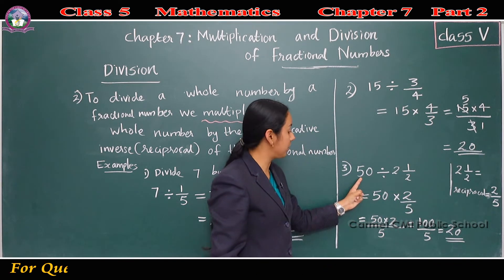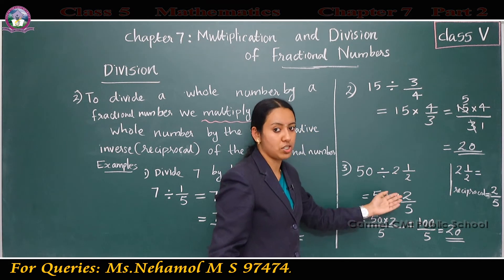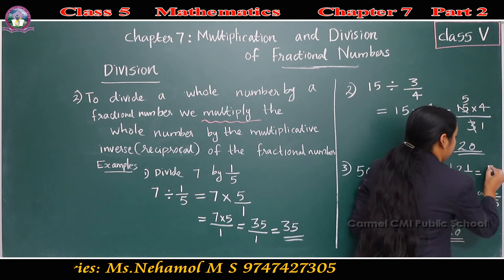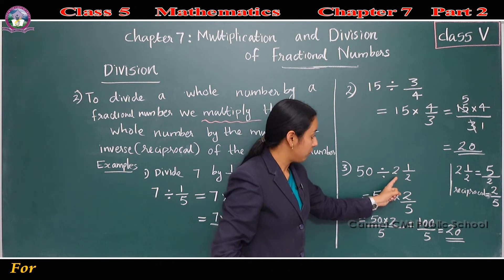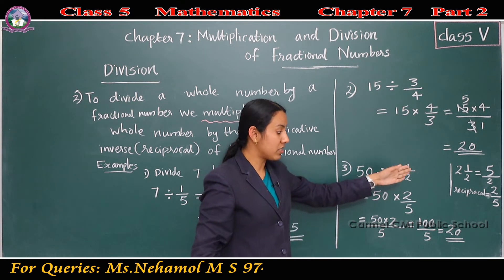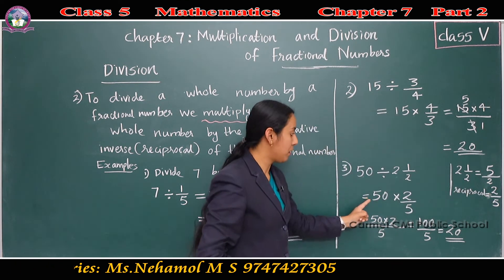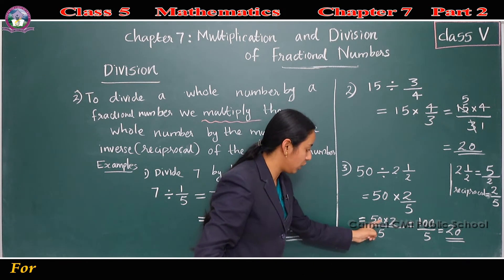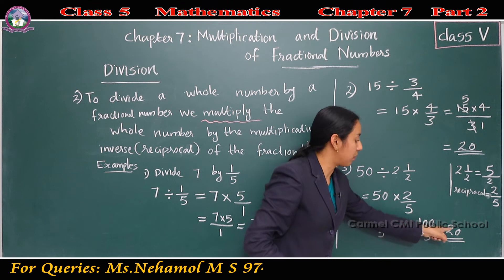Next: 50 divided by 2½. 2½ is a mixed fraction, so convert to an improper fraction first. 2½ means 2 twos are 4, plus 1 is 5, giving 5/2. So 50 divided by 5/2. To divide, take the reciprocal of 5/2, which is 2/5. Then 50 into 2/5: 50 into 2 all divided by 5. 50 into 2 is 100. 100 by 5 is 20. The answer is 20.